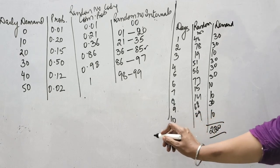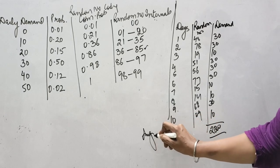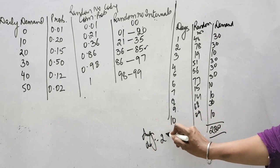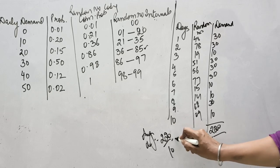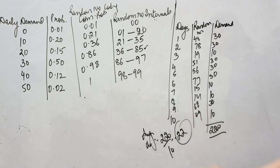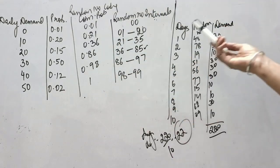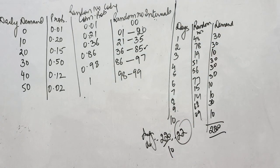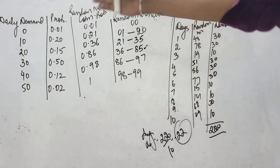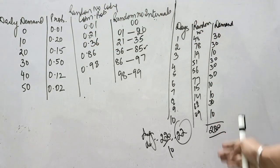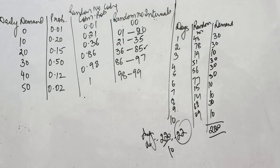The total demand for 10 days comes out to be 220 units. If the question asks you to calculate the average demand, then 220 divided by 10 gives 22 cakes as the average demand per day. So this is how, on the basis of past data, we try to estimate the future demand. Earlier demand was given, and now we have generated the expected demand for the next 10 days.